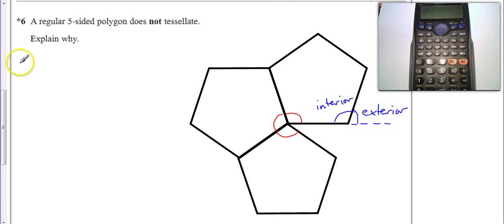Exterior angle of a pentagon, if you do 360 divided by 5, because there's 5 equal exterior angles around the outside, that gives me 72 degrees.